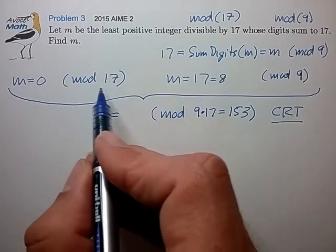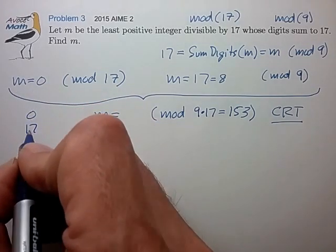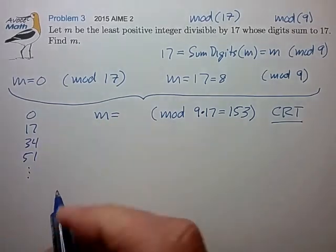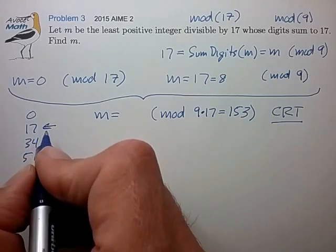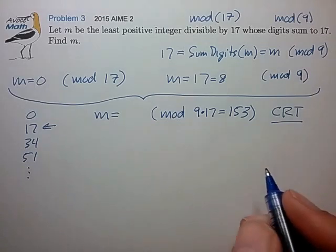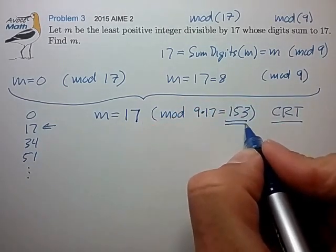In this case, the first condition that m is equal to 0 mod 17, we can write down a list of numbers that satisfy that. Going down this list, we don't have to go very far. We find that 17 is equal to 17 in mod 9, obviously. So we then know that m is equal to 17 in mod 153.